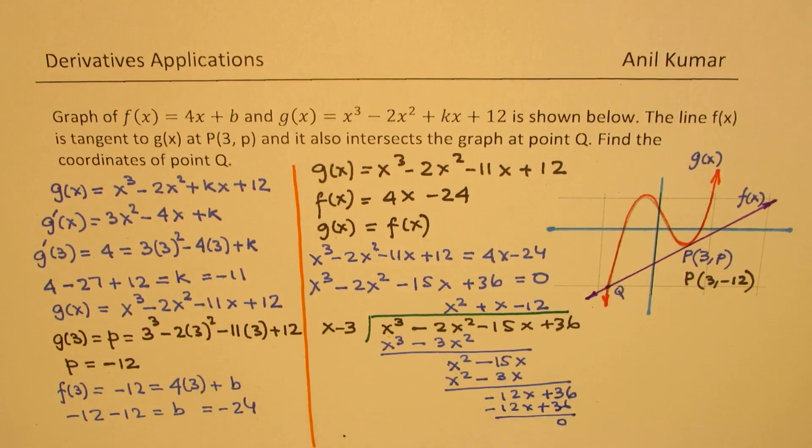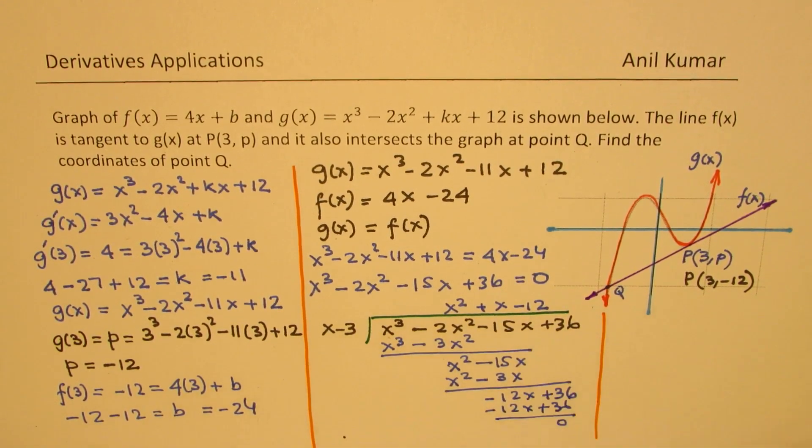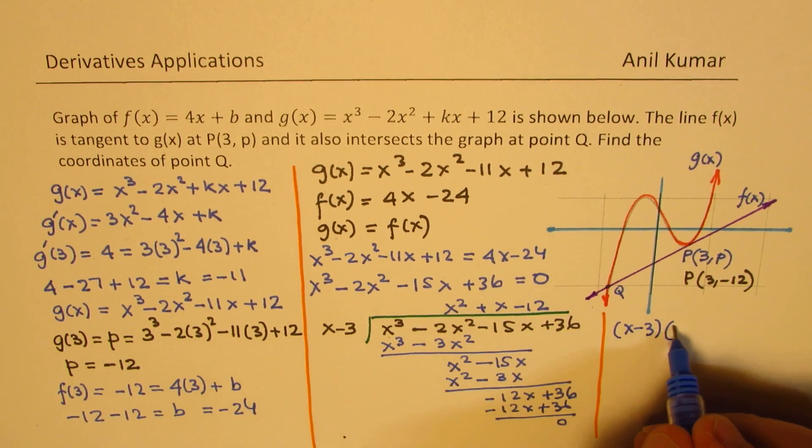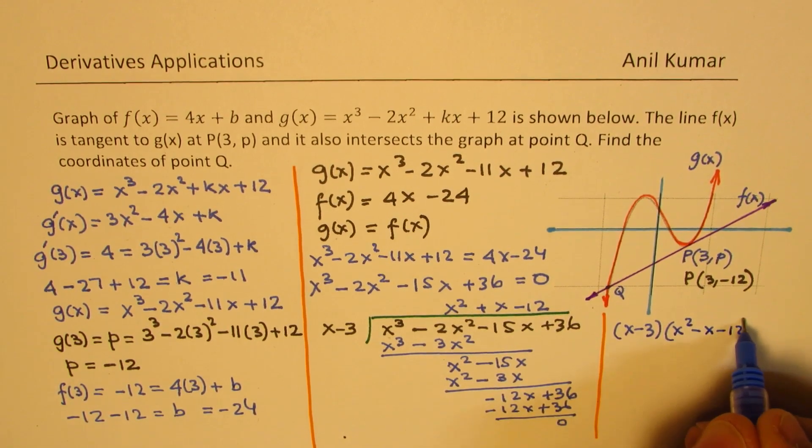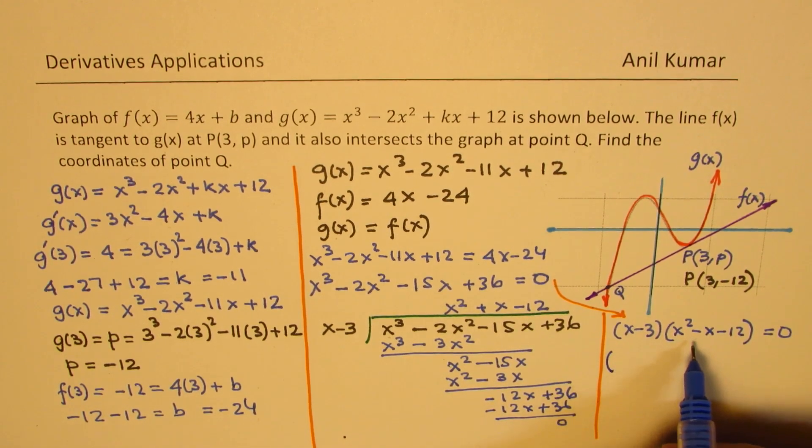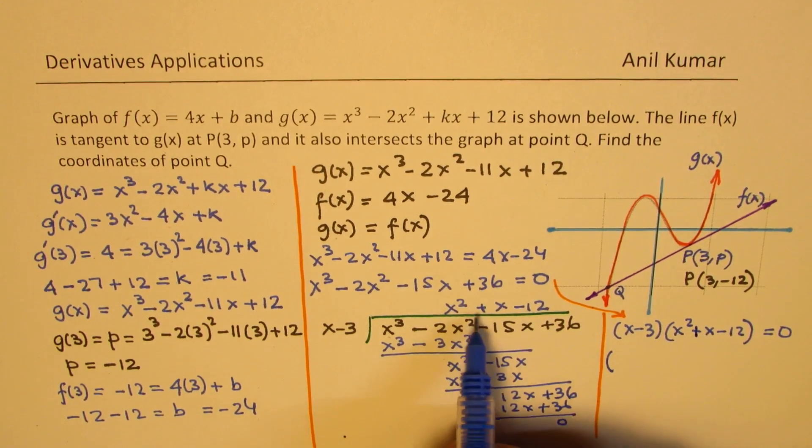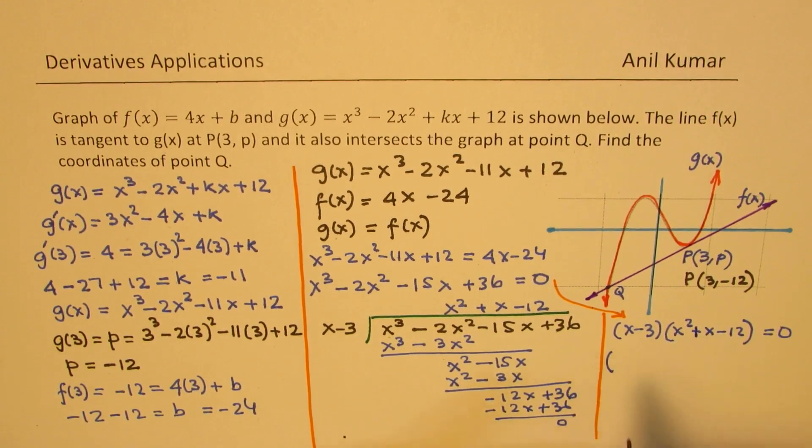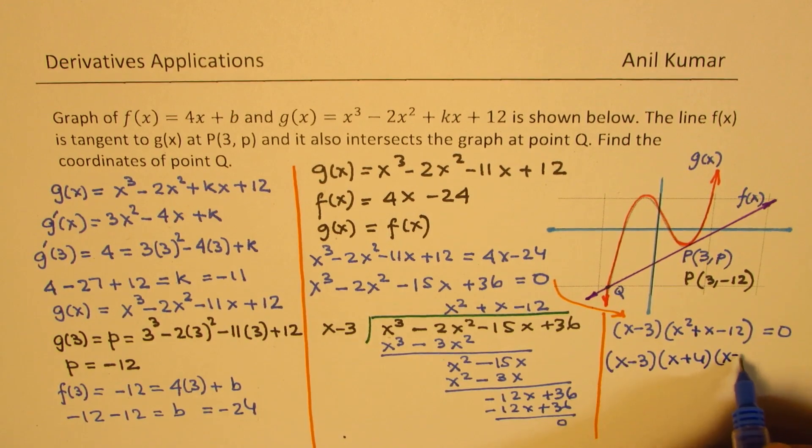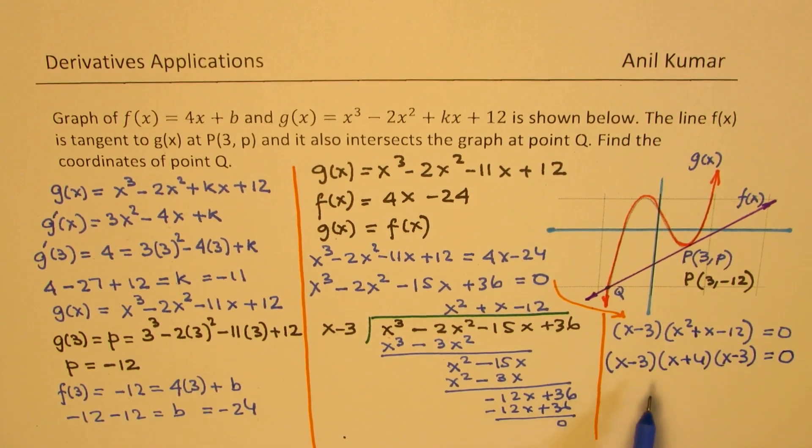So that means the other factor is x² + x - 12. So this equation could be written as (x - 3)(x² + x - 12) = 0. Now we could easily factor this. 4 times 3 is 12, and we have (x - 3)(x + 4)(x - 3) = 0.